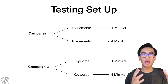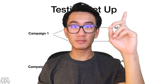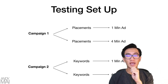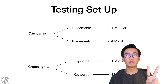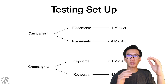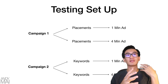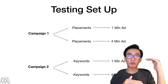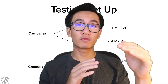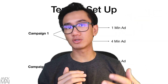I have a video on how to properly split test Google ads on my channel — go watch that, it's very important. Within each of the two campaigns, there are going to be two ad groups. The difference between the two ad groups is one has the one-minute ad and one has the four-minute ad. Rather than having both ads under one ad group, you separate them — because Google doesn't split test properly and would spend the majority of budget on one thing.